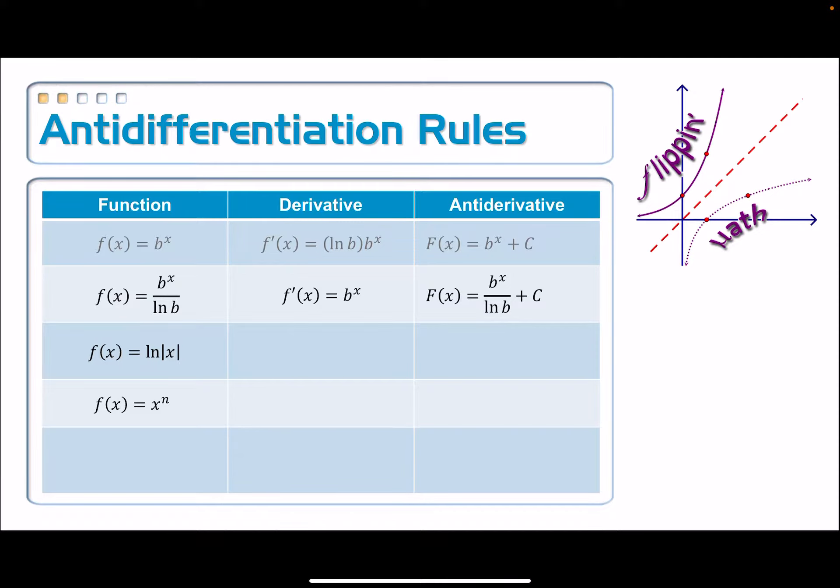So you take its derivative and you get 1 over x. So if I want to work this thing backwards, if I have the differential equation f prime of x is equal to 1 over x, then its antiderivative must be the natural log of the absolute value of x, and then add in your constant of integration.